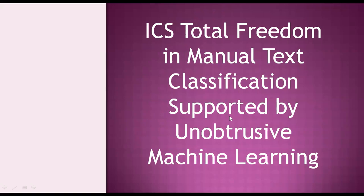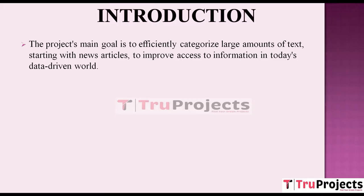Hello, welcome to True Projects. In this video we are going to explain about the project titled ICS Total Freedom and Manual Text Classification Supported by Unobtrusive Machine Learning. The project's primary objective is to create a system that efficiently organizes large volumes of text, especially news articles.